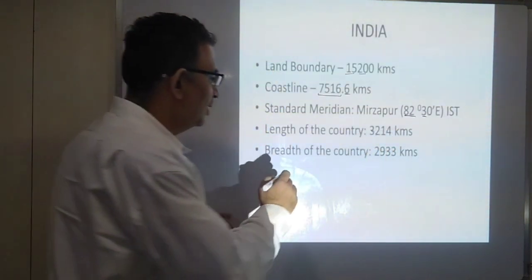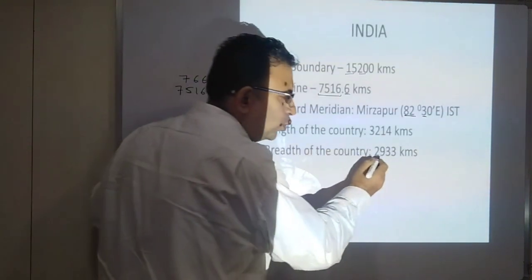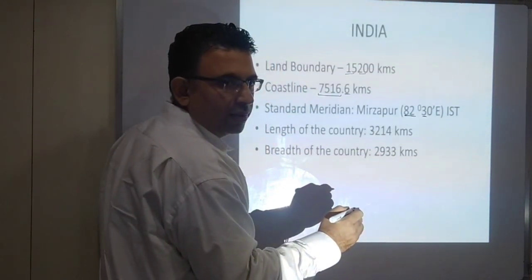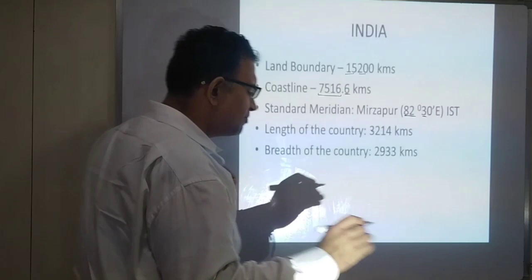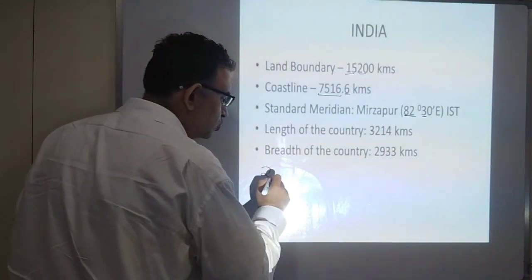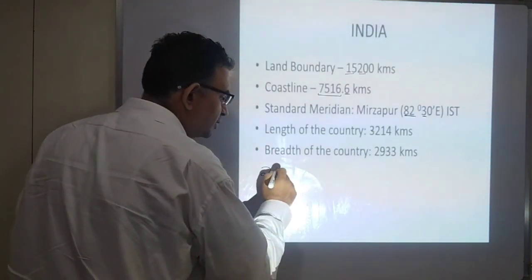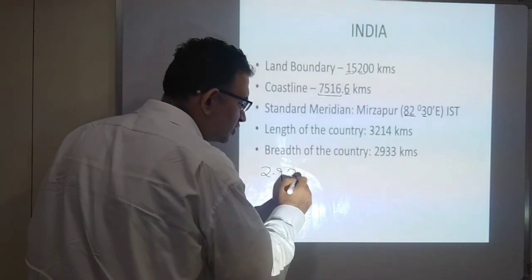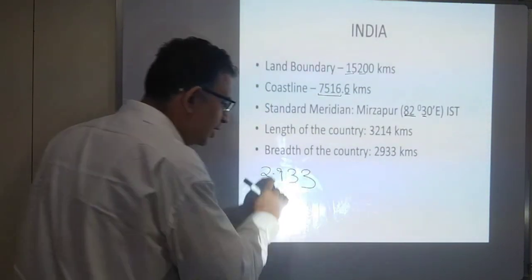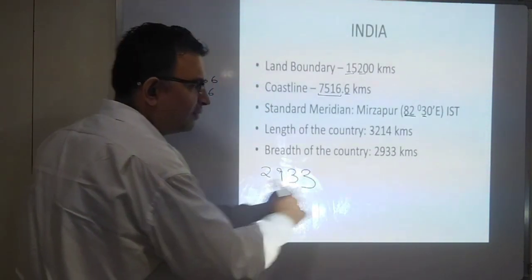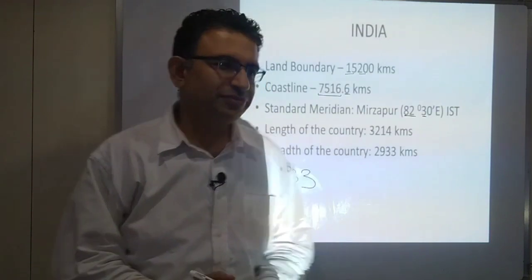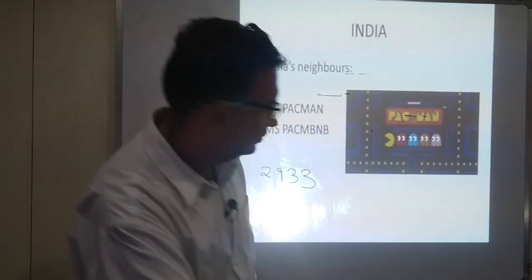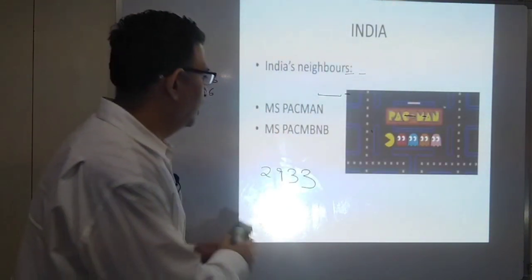For the breadth of the country — 2933 kilometers — the very simple way to remember it: 2.9 is almost 3. Remove the dot, we have 293. So 2933 kilometers. It looks simple.